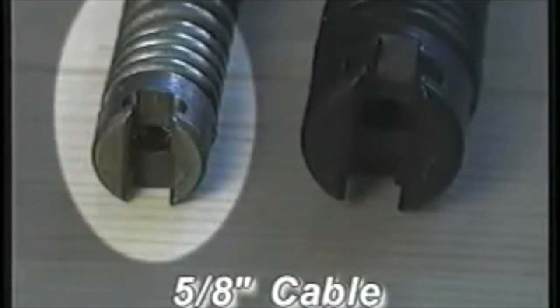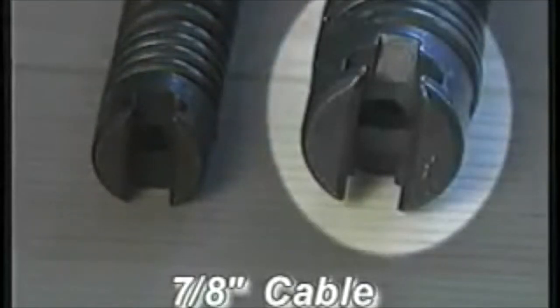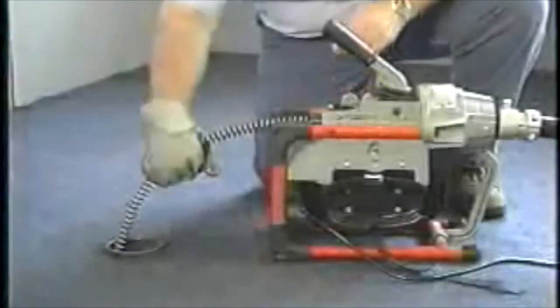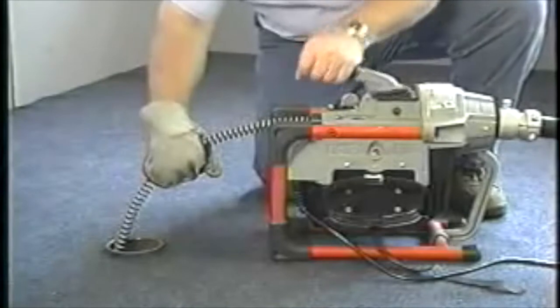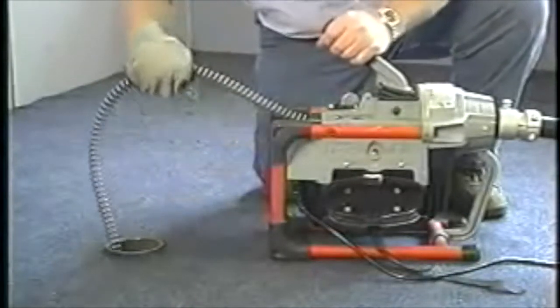It can be operated with both 5/8 inch and 7/8 inch sectional cable. The K60SP is one of the safest machines to operate, even for beginners.